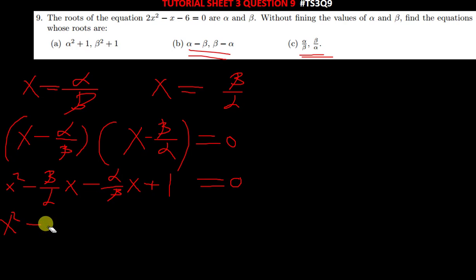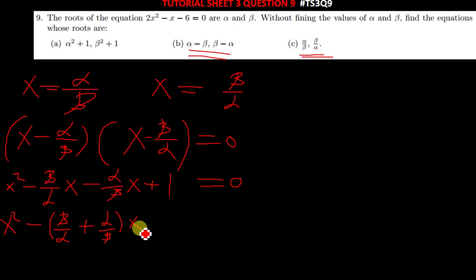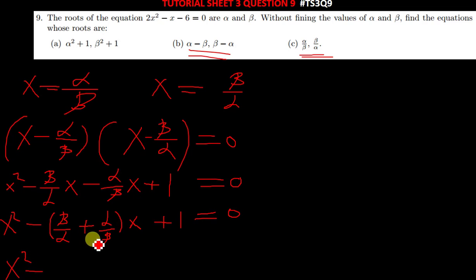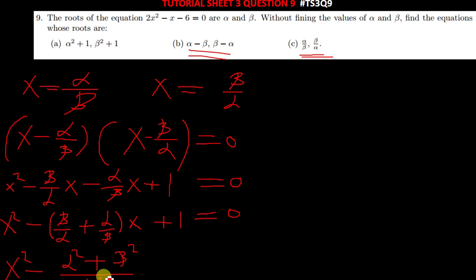From there, factor out the x terms. You have β/α plus α/β factored with x outside. The common denominator for β/α + α/β is αβ, giving (β² + α²)/(αβ) multiplied by x. So you get x² − [(α² + β²)/(αβ)]x + 1 = 0.